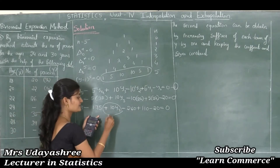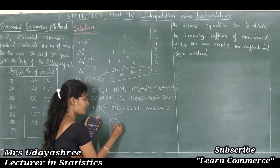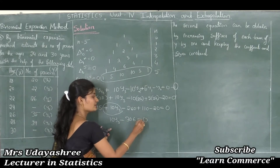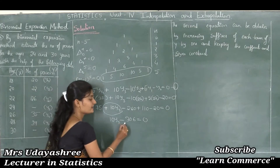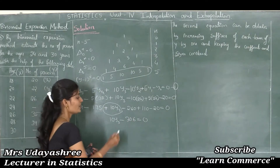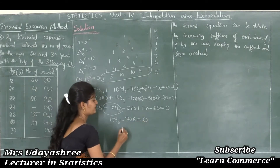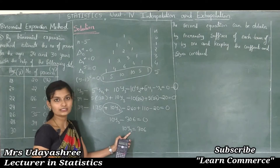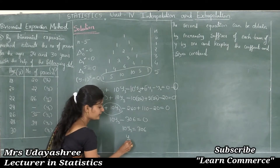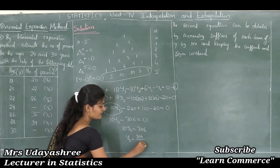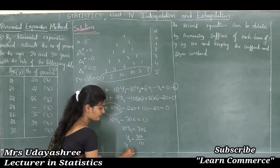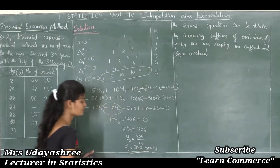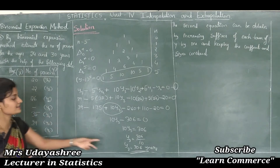Bringing −306 to the right hand side: 10y3 = 306. Therefore y3 = 306 ÷ 10 = 30.6. So we got one missing value, y3 = 30.6.